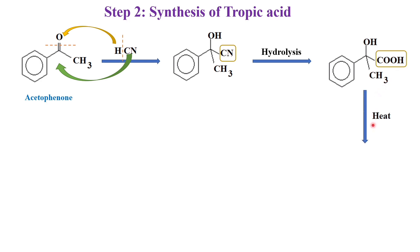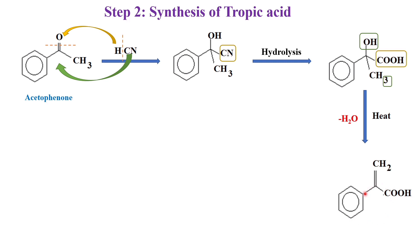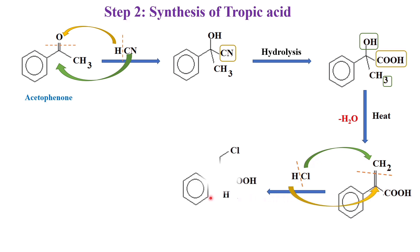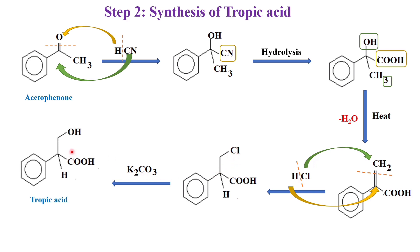Now we are going for heating. On heating, the OH combines with H and is removed as water, and the remaining CH2 would be added to the carbon by means of a double bond. We get the alkene product. With this we are adding HCl. By the addition of HCl, the double bond between carbon and CH2 is broken; Cl would be added to CH2 and H would be added to this carbon. Then by adding potassium carbonate, the Cl would be converted to OH, and we are getting the product as tropic acid.